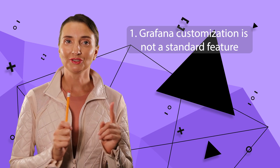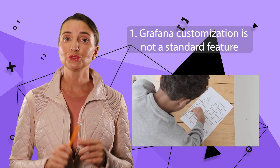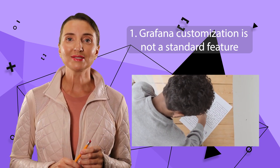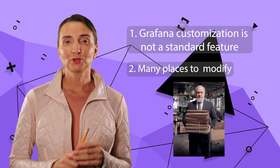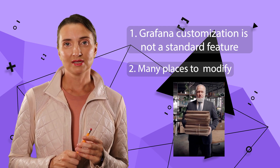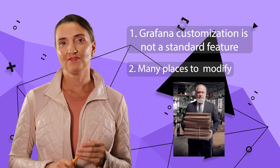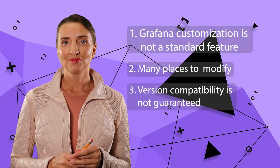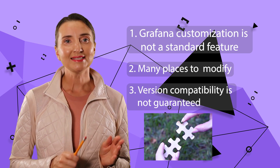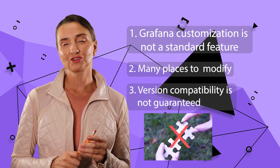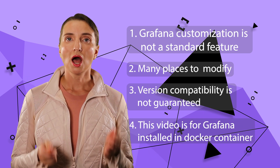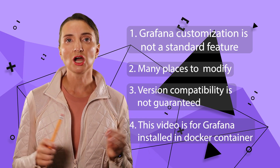Here are a couple of essential things to point out. Number one, there is no standard, clean and straightforward way to do that — you would need to roll up your sleeves and look into the core Grafana configuration files. Number two, the places you need to modify are scattered across many files. Number three, there is a slight chance that all I say in this video would be obsolete in the next major Grafana release. Number four, I cover Grafana installed in a Docker container.